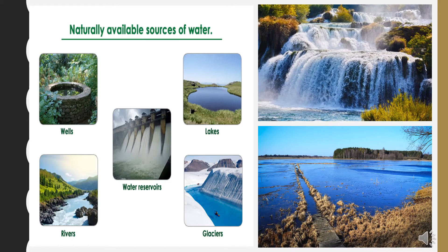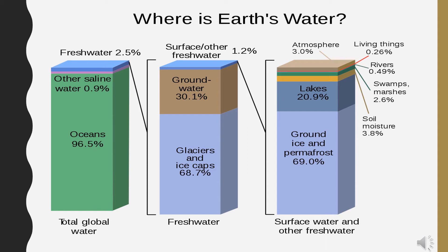This picture represents the naturally available sources of water — water reservoirs, wells, lakes, glaciers, rivers, streams, etc. Here we have shown the data analysis of water resources. Of total global water, 96.5% is contributed by oceans, 0.9% by other saline waters, and fresh water contributes only 2.5%. Of that fresh water, glaciers and ice caps contribute 68.7%, groundwater contributes 30%, and surface water contributes nearly 1.2%. Of available surface fresh water, ground ice and permafrost contribute nearly 69%, lakes contribute nearly 21%, and the atmosphere holds about 3%, which includes living things, rivers, swamps, and soil moisture.